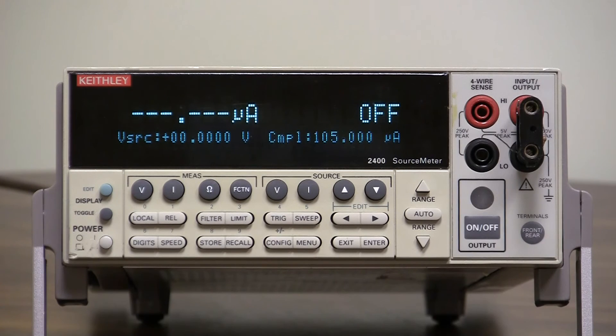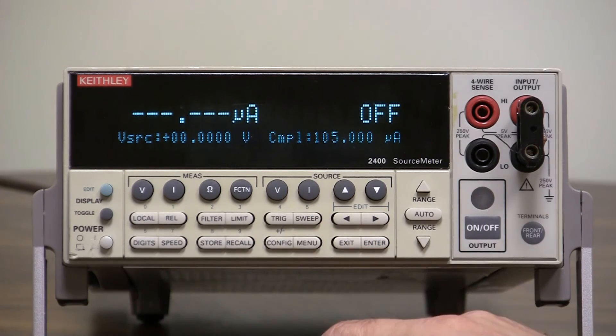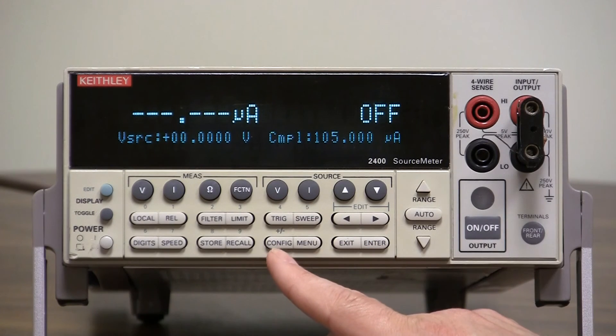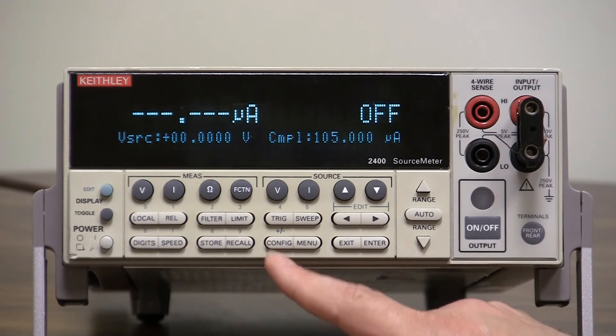To set up a fast voltage pulse we need to first set up the voltage function for source, which is already set. Let's press the voltage and then we need to use a two-point custom sweep to do this. So we need to configure the sweep.